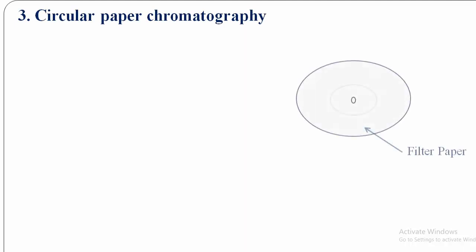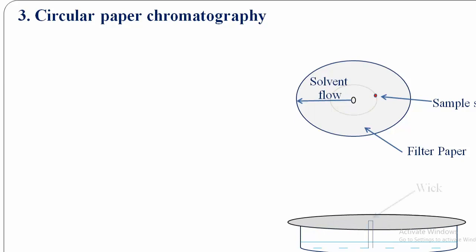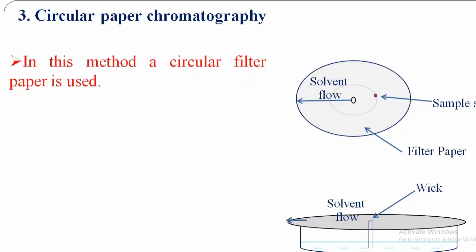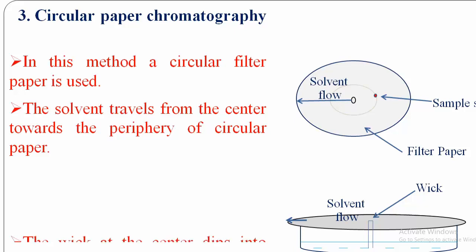Circular paper chromatography: a circular filter paper is used in which the sample spot is given near the center, and the solvent flows from the center toward the outward position. The filter paper is placed on a petri dish — a wick at the center dips into the solvent, and the solvent rises upward through the wick then moves from center to the periphery of the circular paper, separating the components.